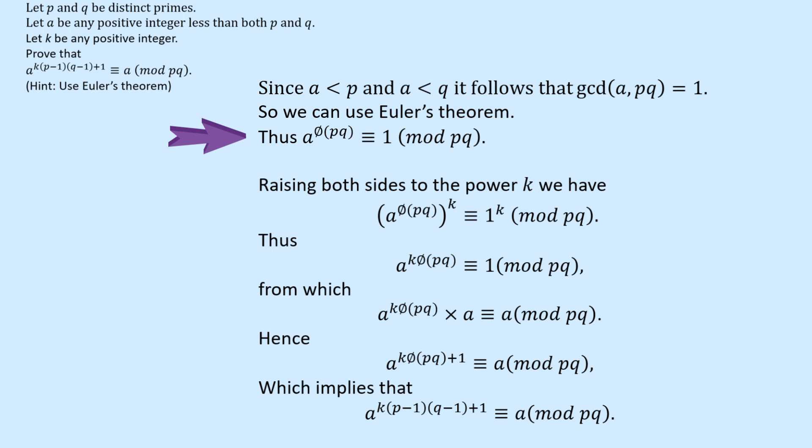Now we've got to get a K in that because we can see in what we're trying to prove there's a K in the power. So let's raise both sides to the power K. So now we've got 1 on the right hand side. We want A, so let's multiply both sides by A. Because on the left hand side we're multiplying by A, we can just add 1 to the power. So we've got A to the power of K times phi of PQ plus 1 is equivalent to A modulo PQ. And now we can just put in the formula for phi of P times Q, which is P minus 1 times Q minus 1. And that then completes the proof.